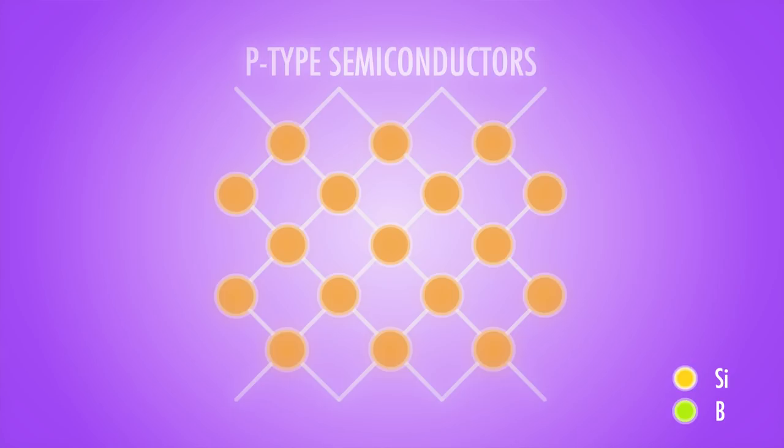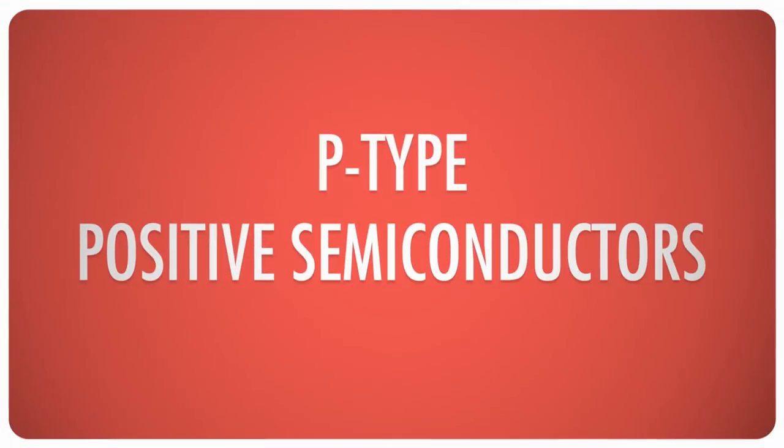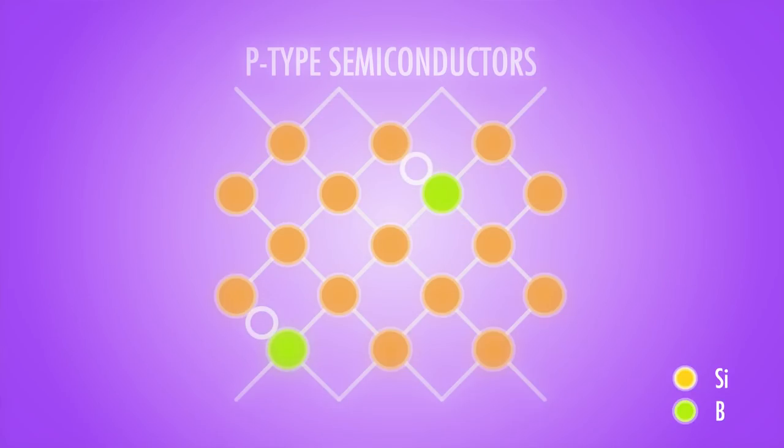Similarly, crystals doped with elements that create an electron deficiency are called p-type, or positive semiconductors, because they have a more positive charge than pure silicon would have on its own. p-type semiconductors work a little differently — because they have empty spaces available, the electrons that are normally part of specific silicon atoms are able to jump around from one atom to another. Each jump fills a hole and creates a new one, allowing another electron to move in the same way.